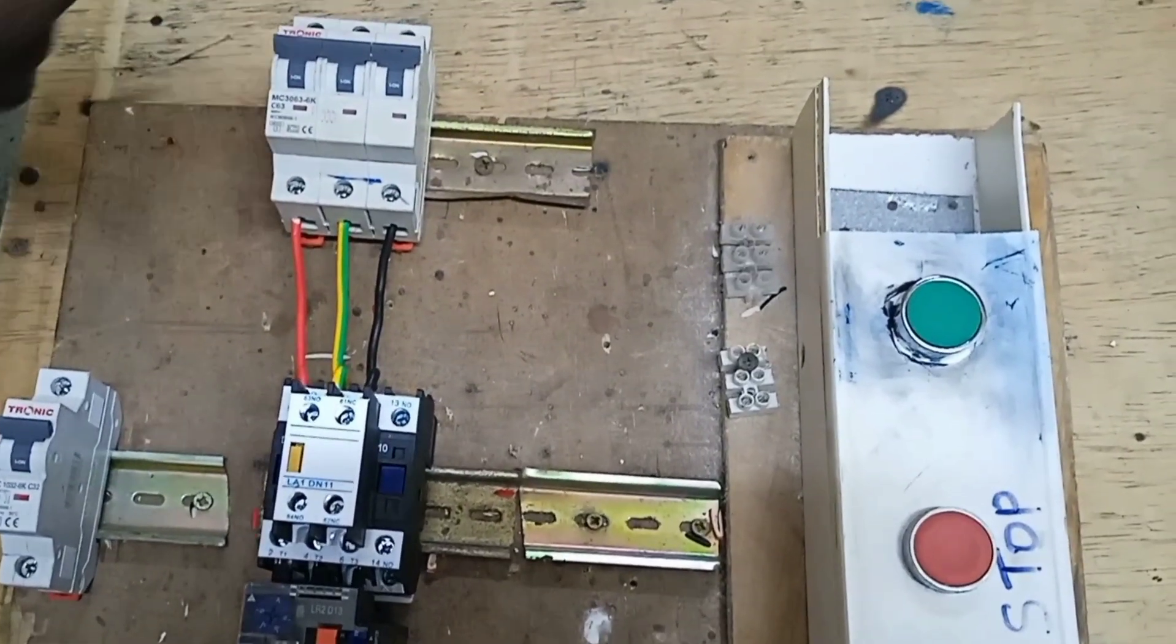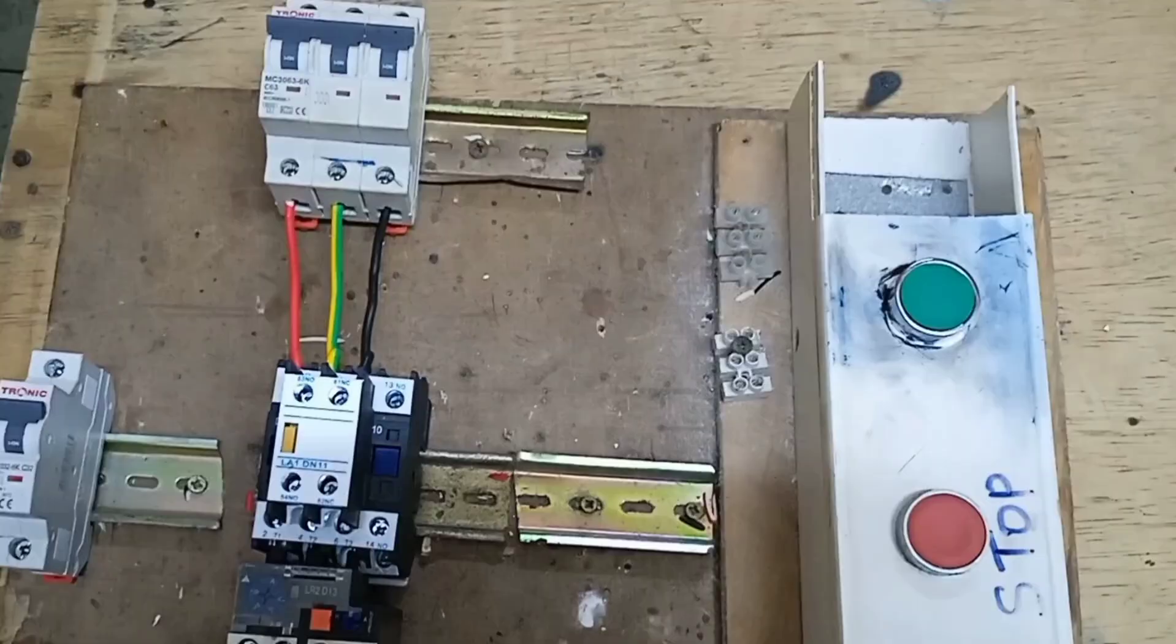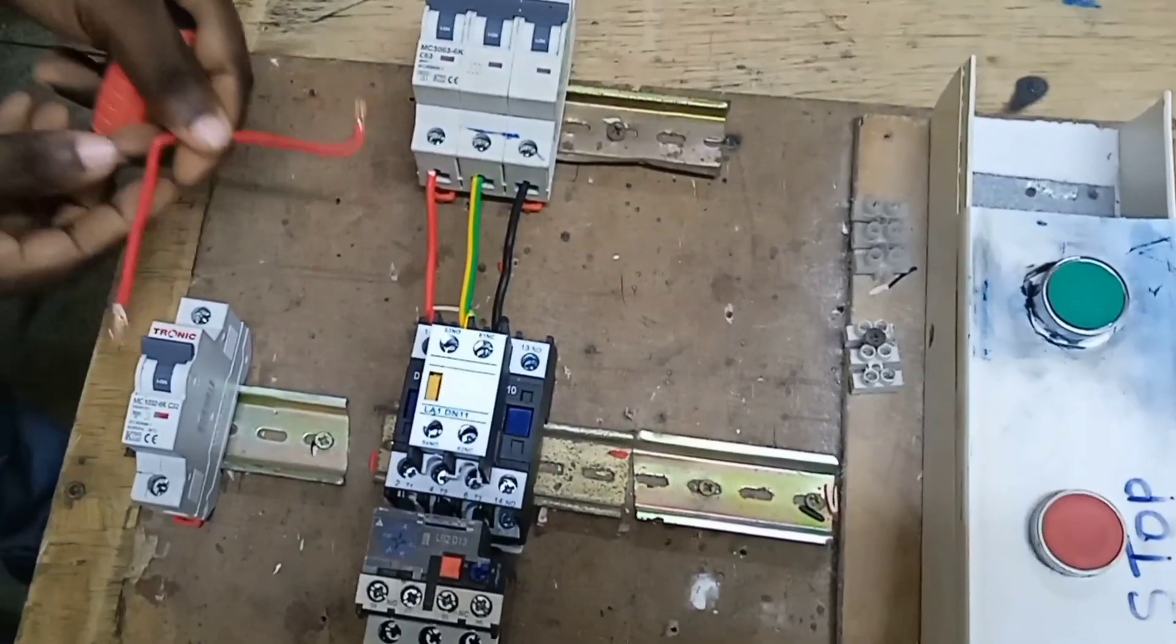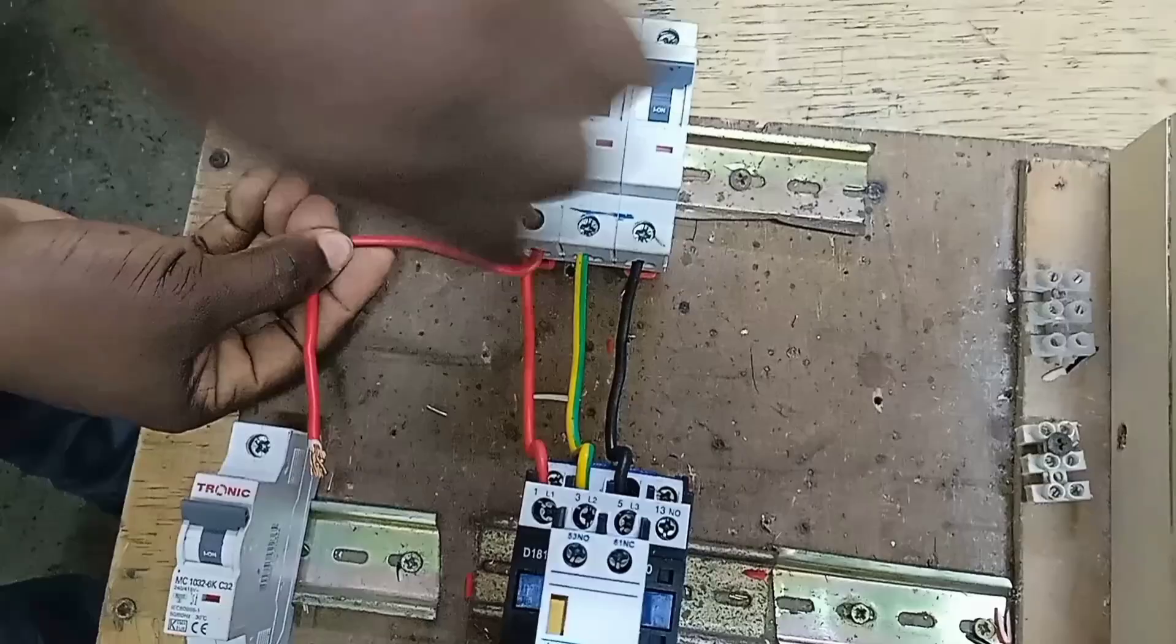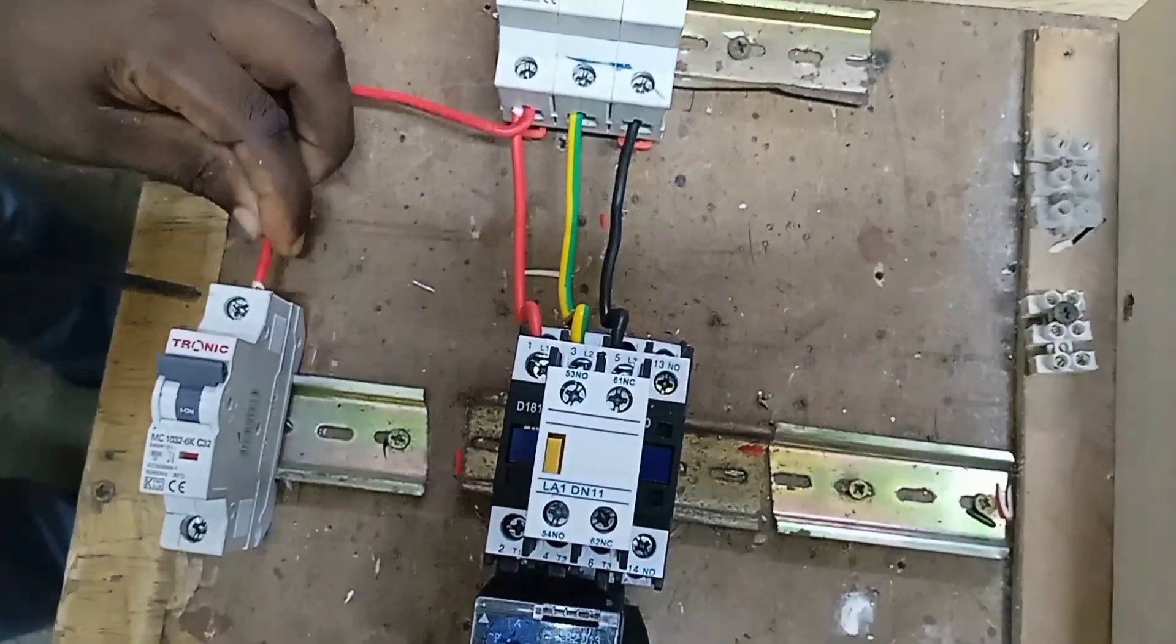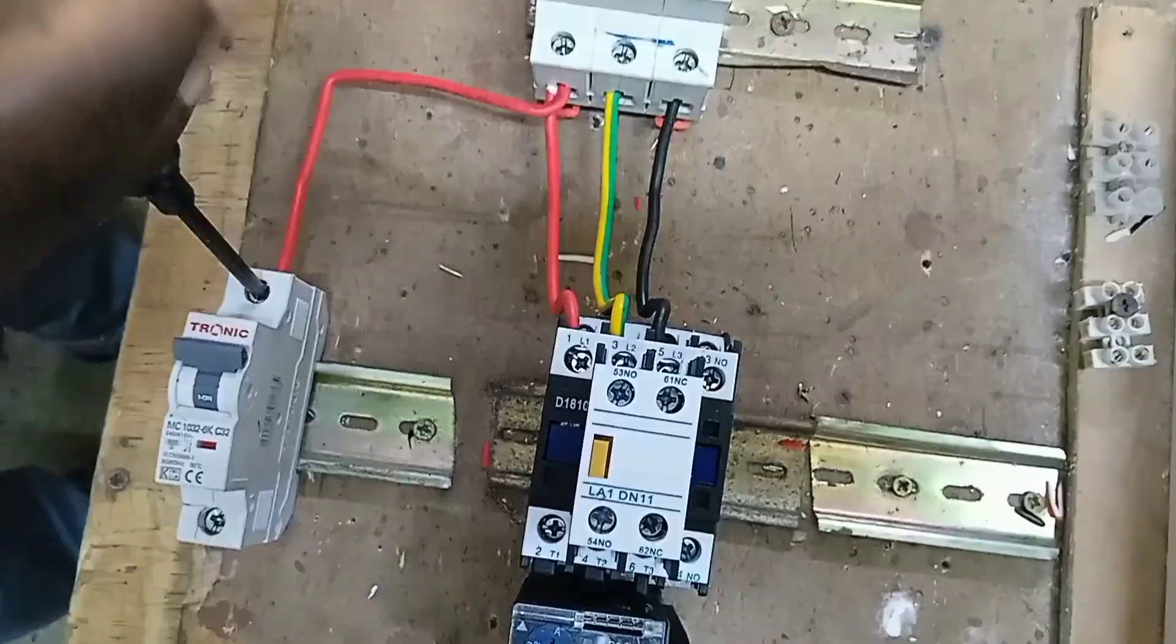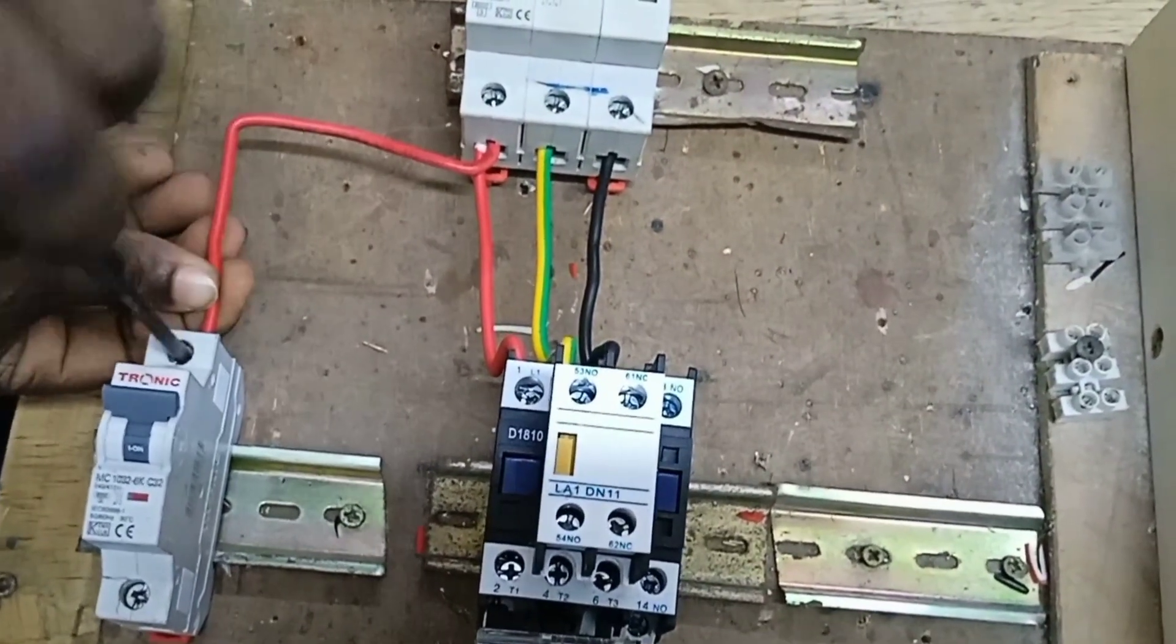This is how we connect the control circuit of direct on-line starter. We start with looping power from this terminal here, and then connect this power to this single-phase MCB, which switches on and switches off the control circuit.